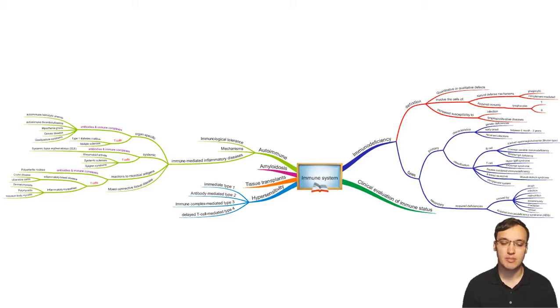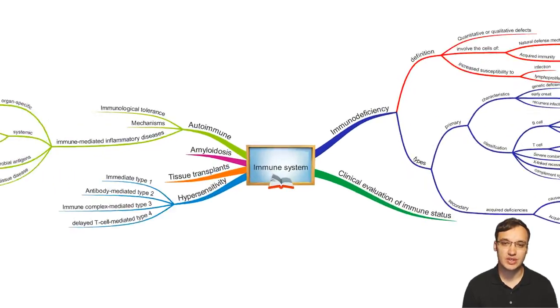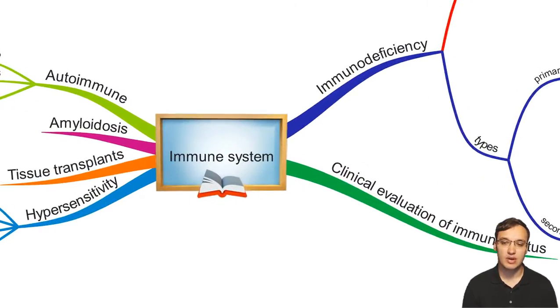Here you see a mind map which is covering most of the immune system disorders. We have six main branches, one of the branches being immunodeficiency.